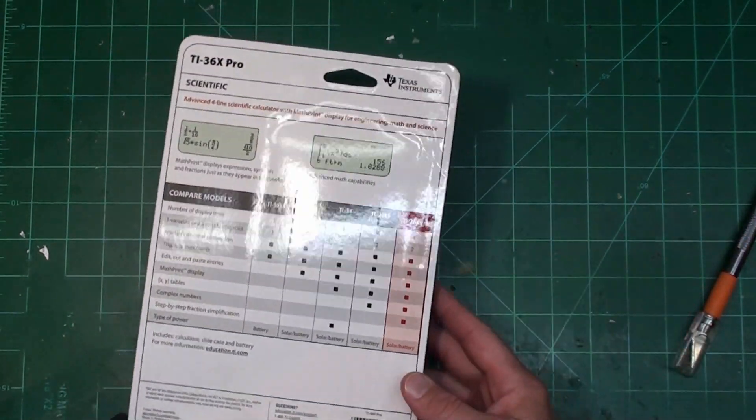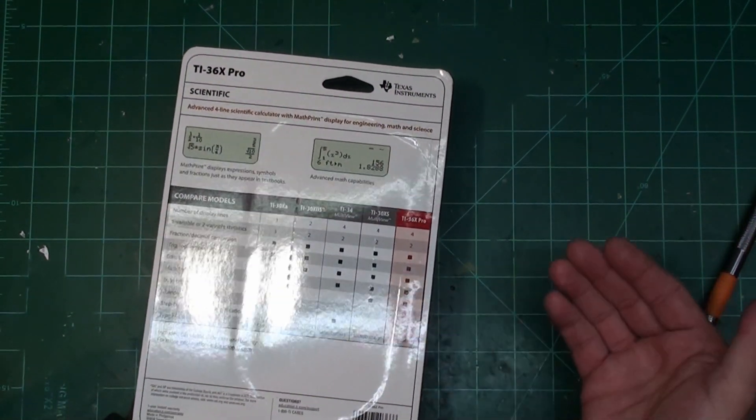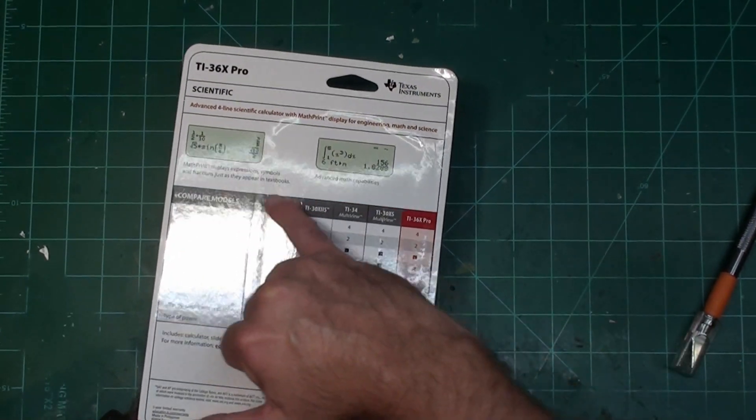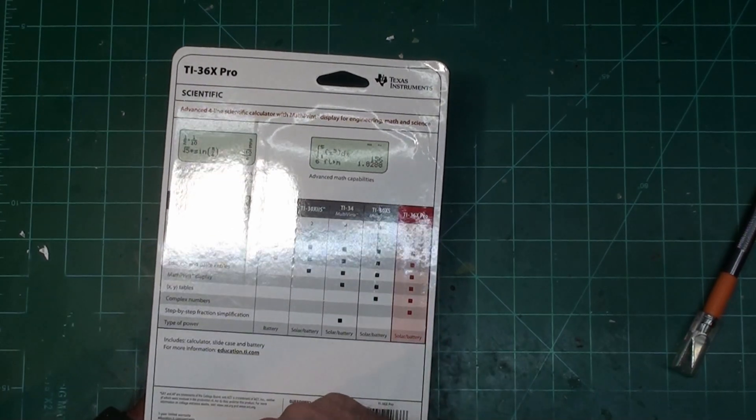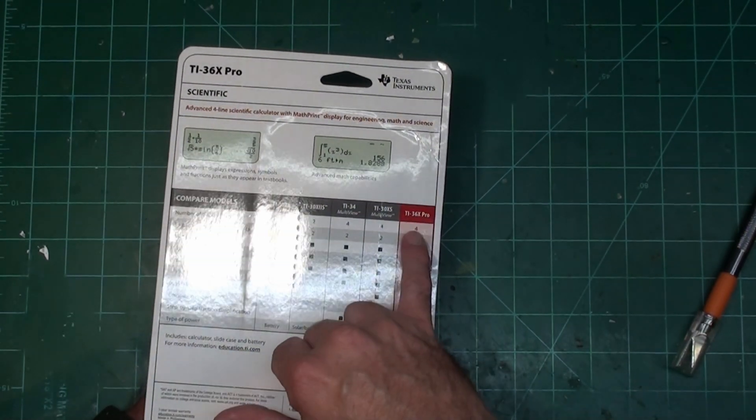For Texas Instruments, it's the best calculator I could find that was that way. And on the back, it says compare models: TI-30, 30, 34, 30, 36. Number of lines of display, it has four.